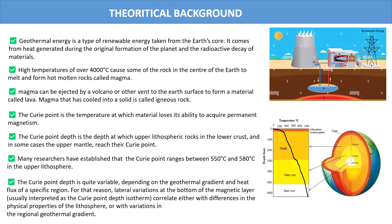Most of these minerals have magnetic properties below what is called the Curie point temperature — the temperature at which a material loses its ability to acquire permanent magnetization. That means above the Curie temperature, the material will no longer have magnetic properties to respond to a magnetic field. In the outer core, mantle, and inner core you don't expect to find minerals there because the temperature is so high above the Curie temperature, which is around 550 to 580 degrees Celsius. Within the lithosphere is where we focus on minerals — that is the connection between the magnetic method and geothermal energy.